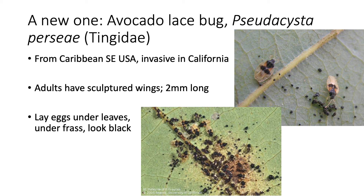The avocado lace bug is one of the most recent arrivals in Hawaii. It originates in the Caribbean and southeast USA, and has become invasive in a small part of California where it attacks avocado and a number of ornamental species. These are interesting little insects — the adults, visible in the top image, have finely sculptured, lace-like wings. If you look closely with a hand lens you'll be able to see this. They're about two millimeters in length, roughly one twelfth of an inch.